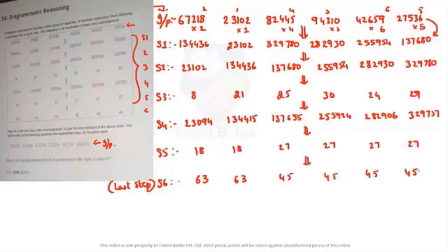That is how it happened from input to step one — notice how tricky it is. If you don't think properly you might not get the logic; it's all about thinking ability. Now from step one to step two, the numbers are just arranged in ascending order from smallest to largest.